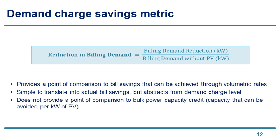When presenting results, I'm using one main demand charge saving metric: percentage reduction in billing demand, which is billing demand reduction over billing demand without PV. This provides a point of comparison to bill savings achievable through volumetric rates and is a simple way to translate into bill savings by multiplying by the dollar-per-kilowatt amount, while avoiding assumptions about specific demand charge rate levels. It doesn't, however, provide a point of comparison to utility cost savings, which uses the bulk power capacity credit — for that we use another metric present in the full briefing appendix online.